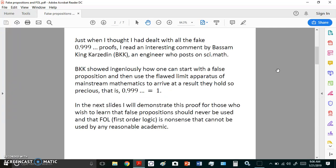There's an engineer who posts comments on sci.math. His name is Bassam King Karzidun. He showed ingeniously how one can start with a false proposition and then use the flawed limit apparatus of mainstream mathematics to arrive at a result they hold so precious. That is that fallacy 0.999 dot dot dot equals 1.